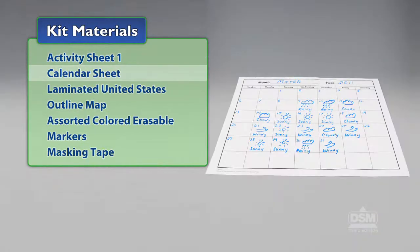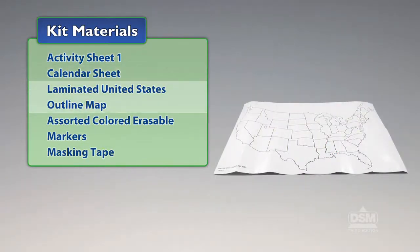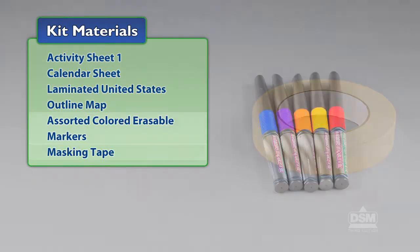You will need the following materials from the kit: Activity Sheet 1, a calendar sheet, the laminated United States outline map, assorted colored erasable markers, and masking tape.